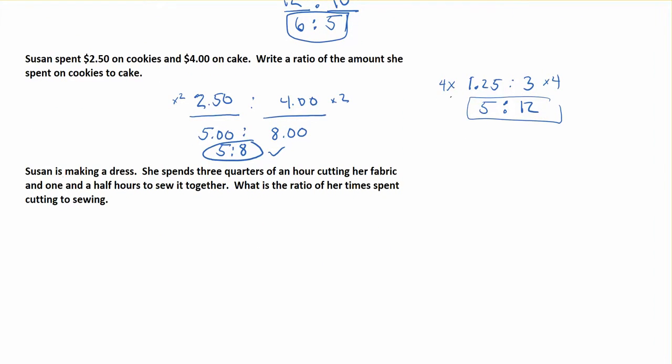Another example: Susan is making a dress. She spends three quarters of an hour cutting her fabric, so cutting is 3/4 of an hour. She spends one and a half hours to sew it, so 1.5 hours to sew. What is the ratio of her time spent cutting to sewing? So I want cut to sew. I'm going to say 3/4 to 1.5. We need to get rid of fractions and decimals and get it in the simplest form.